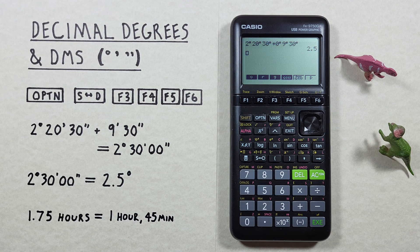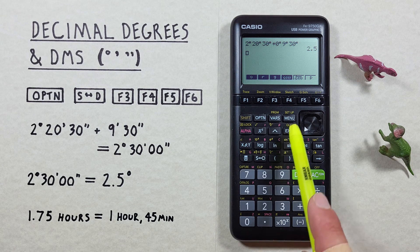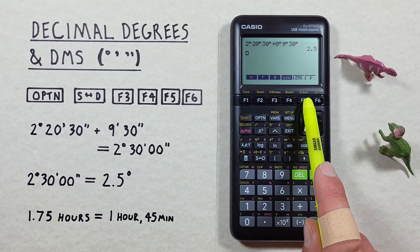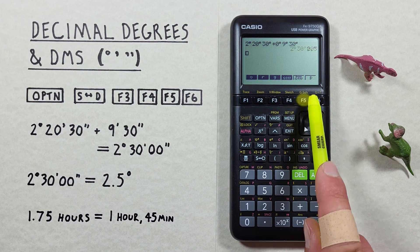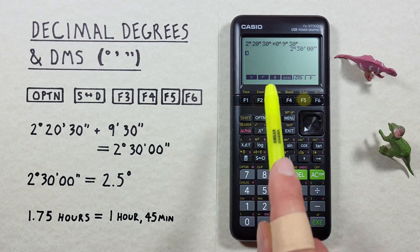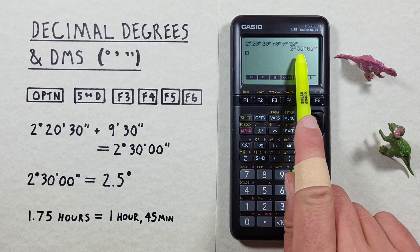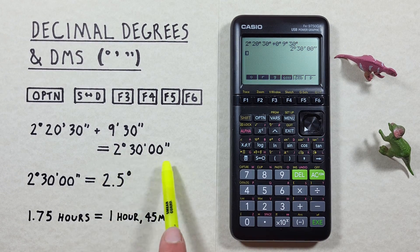If we want to convert that to degrees minutes seconds, we hit that and we get 2 degrees, 30 minutes, 0 seconds, which is correct.